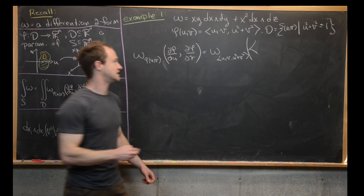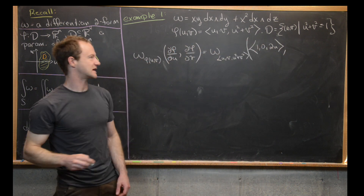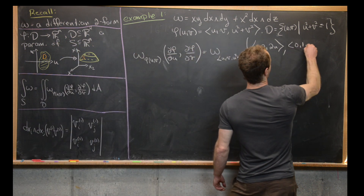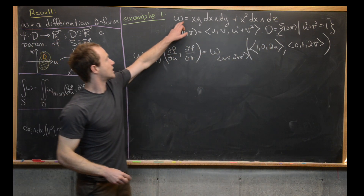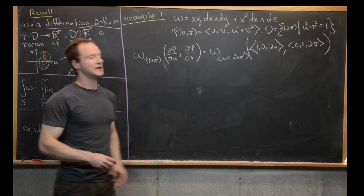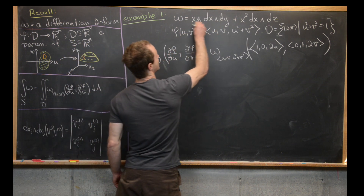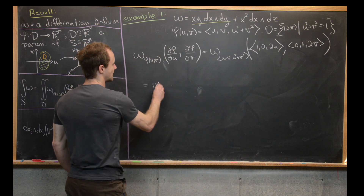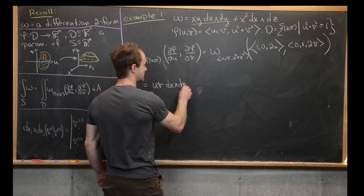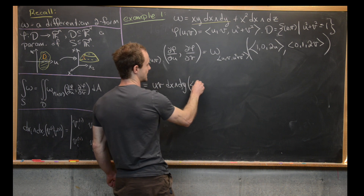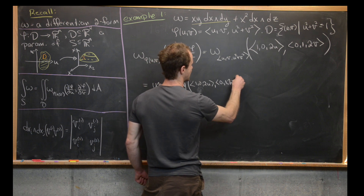The partial of phi with respect to u gives us (1, 0, 2u), and the partial of phi with respect to v gives us (0, 1, 2v). Now we insert everything. Everywhere we see x, we put u, and so on. The first term, x·y, becomes u·v. Then we have dx∧dy evaluated at those two vectors: (1, 0, 2u) and (0, 1, 2v). And then x² becomes u², with dx∧dz evaluated at the same two vectors: (1, 0, 2u) and (0, 1, 2v).